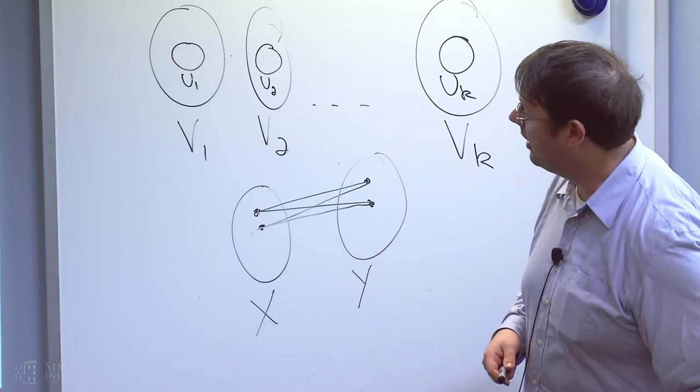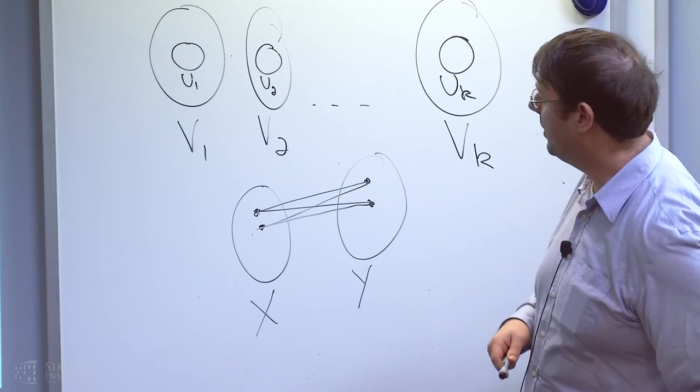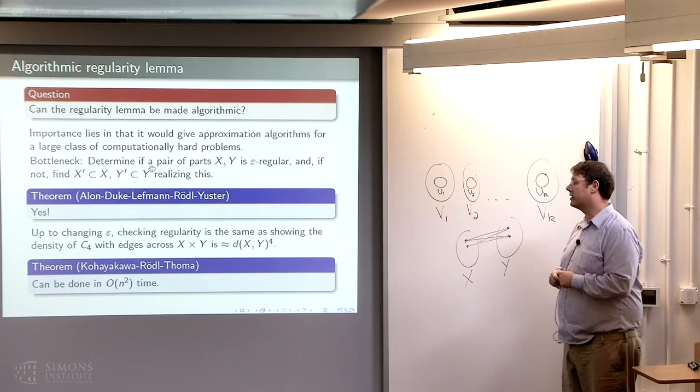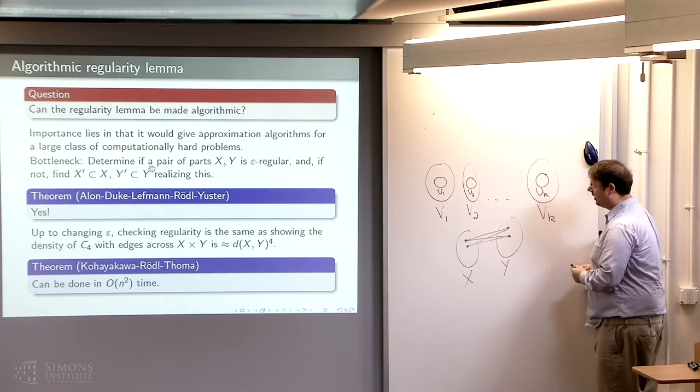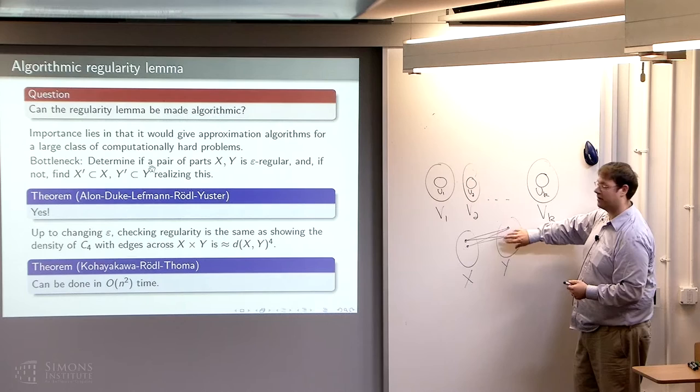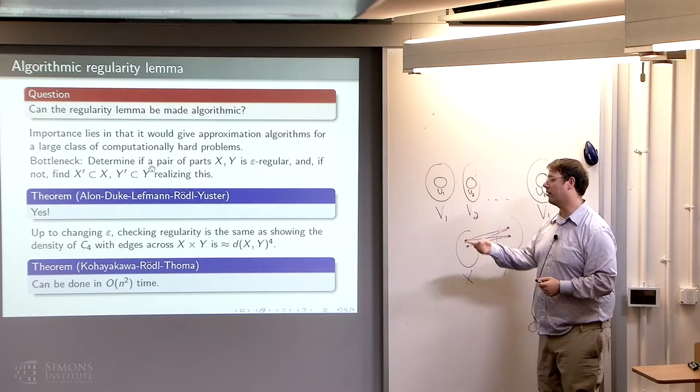The question was how fast can you make the algorithm. It was sped up from essentially matrix multiplication time down to n-squared time by Kohayakawa, Roodle, and Tama. Their key idea: instead of looking at every pair on one side and counting common neighbors, you place an explicit sparse expander graph on that side and count just over pairs in that expander graph, giving a quadratic time algorithm — quadratic in n, which is linear in the input size if you describe a graph by its adjacency matrix.